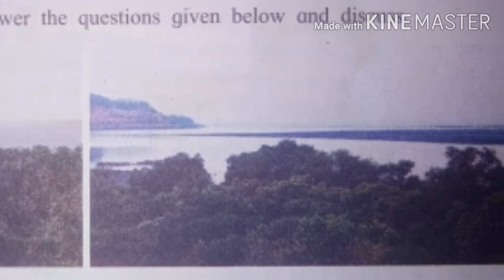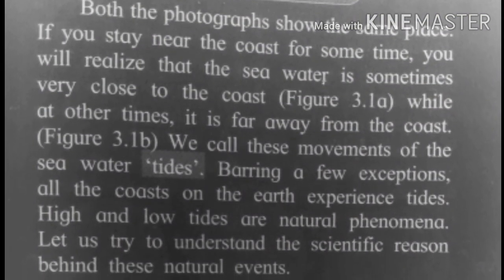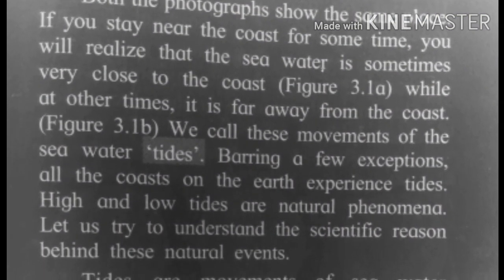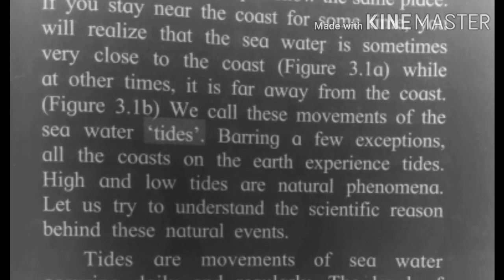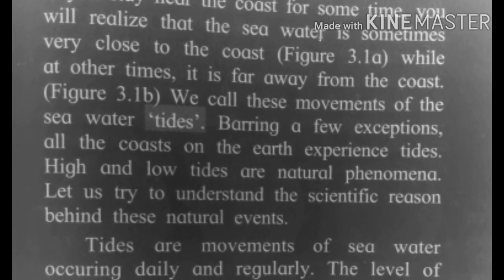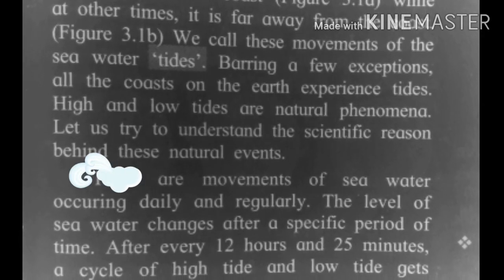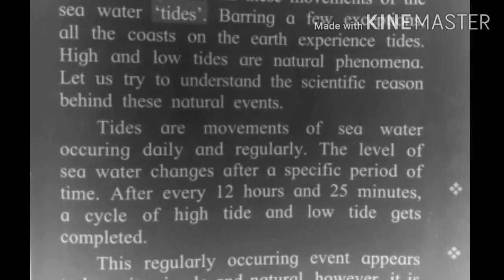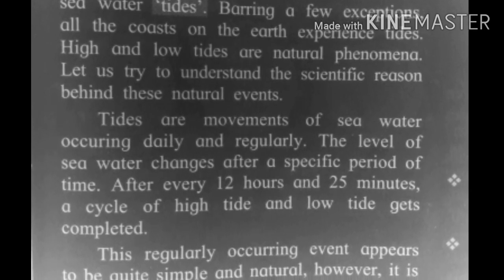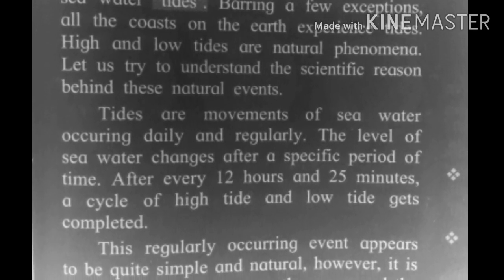Observe these two pictures. These pictures show the difference in water level due to the tides. Both photographs show the same place. If you stay near the coast for some time, you will realize that the sea water is sometimes very close to the coast, while at other times it is far away from the coast, as shown in figure 3.1. We call these movements of the seawater as tides. Bearing a few exceptions, all coasts on the earth experience tides. High and low tides are natural phenomena.